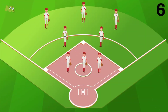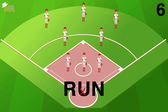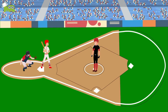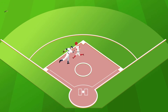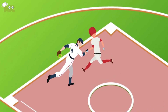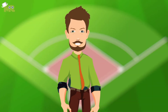Rule 6: The fielding team is supposed to prevent runs from being scored. They can make the batsman miss, catch the ball, tag one of the bases before the batter reaches it, or tag the batter while they are running with the ball. Each of these scenarios gives the batting team an out.